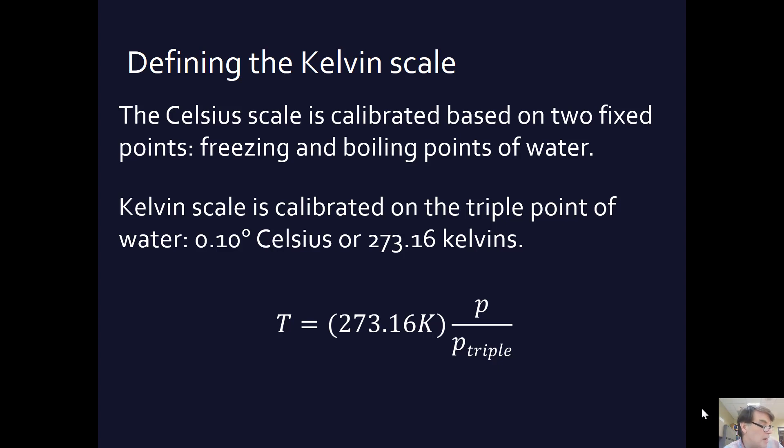Well, we can figure that out because we know the formula is T equals 273.16 Kelvin times the ratio between the pressure it's at and the pressure at the triple point of water.